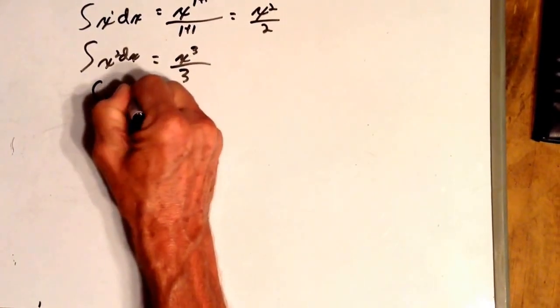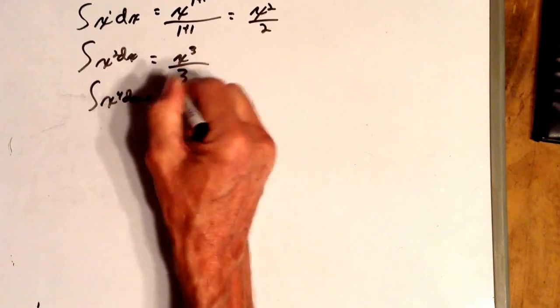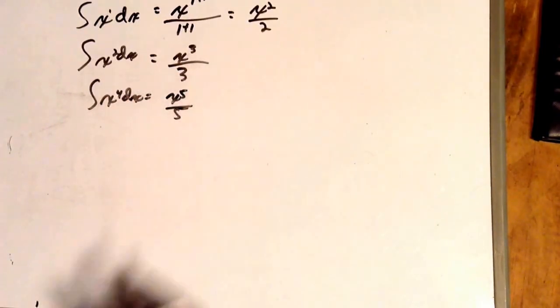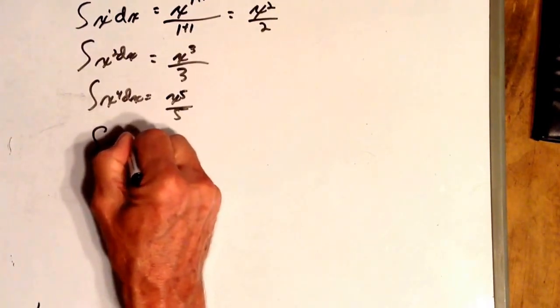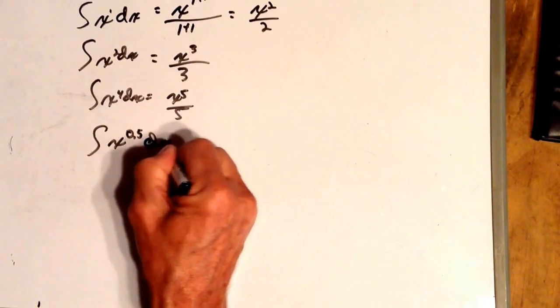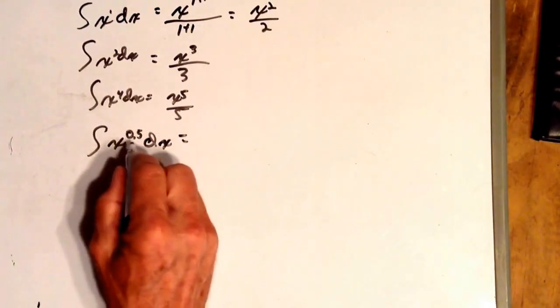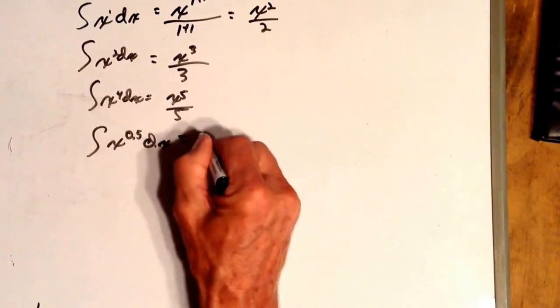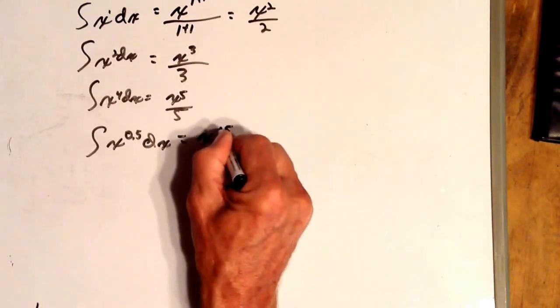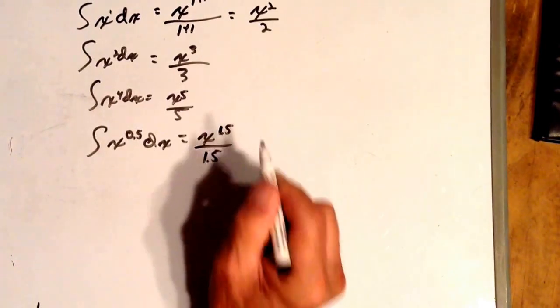Integral of x to the 4th dx equals x to the 5th over 5. What about the integral of x to the 1 half dx? Well, it's x to the 0.5 plus 1, x to the 1.5 power divided by 1.5.